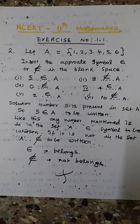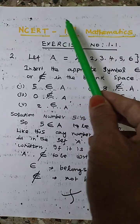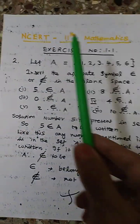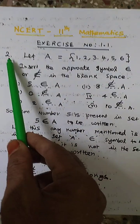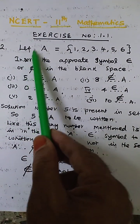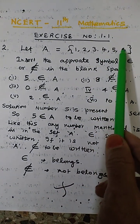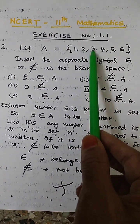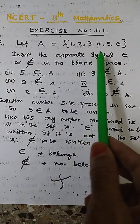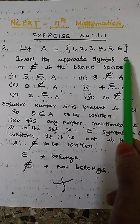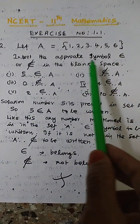Welcome to Sairam Arul channel. NCRT 11th Mathematics, Exercise 1.1. We have to see the second sum. Let A be the set Z having elements 1, 2, 3, 4, 5, 6. Insert the appropriate symbol — ∈ (belongs) or ∉ (not belongs) — in the blank space.